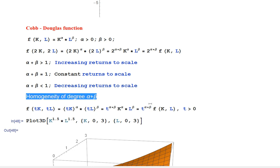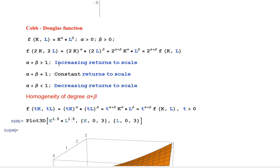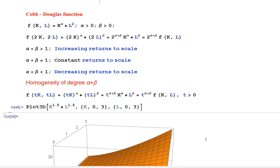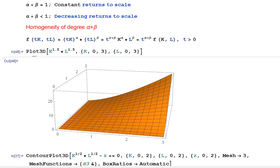A property like this is called homogeneity of degree alpha plus beta. The power alpha plus beta gives us the degree of homogeneity. It is a useful property to remember, and it explains the intuition behind the names increasing, constant, and decreasing returns to scale.